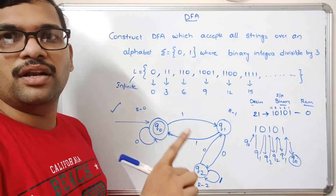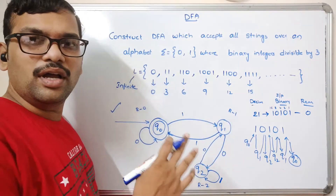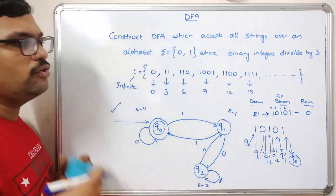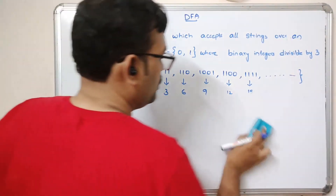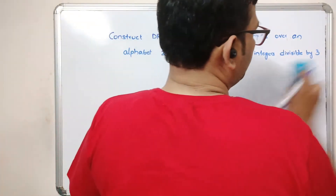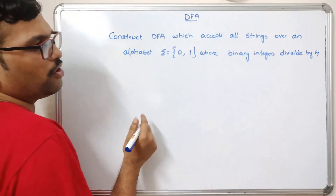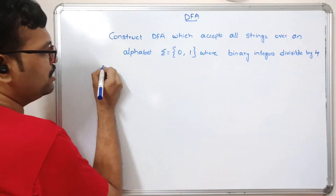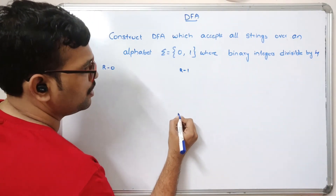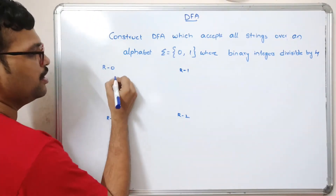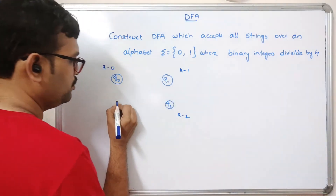So this is how we construct the DFA for a divisibility problem. Now let us take one more example: divisibility by 4. You can also practice with 5, 6, or 7. For divisibility by 4, the possible remainders are 0, 1, 2, 3. So we create four states: Q0, Q1, Q2, and Q3, where Q0 is the final state since remainder 0 means divisible by 4.